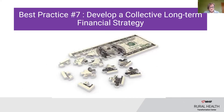Best practice number seven is to develop a collective long-term financial strategy. It's imperative to develop a financial strategy with key stakeholders so that ownership, commitment, and role clarification support the long-term engagement, identify opportunities for in-kind donations, as well as direct monetary support of the population health initiative. This can take many forms, such as pro bono services or administrative staff support, donation of space, volunteer time, prizes or supplies, cost sharing, or promotional support such as free display ads in local newspapers, public service announcements, and more.